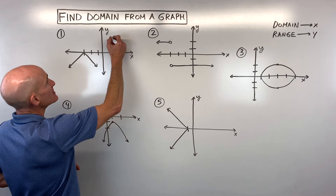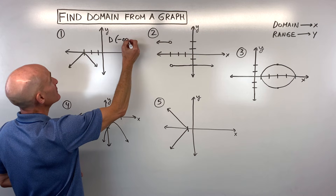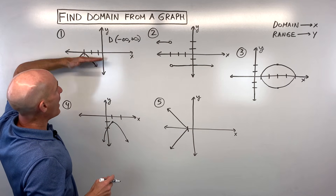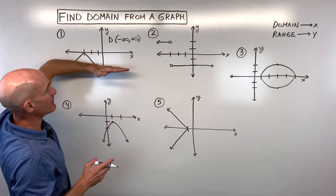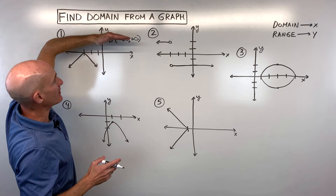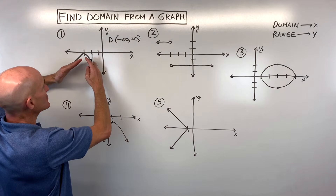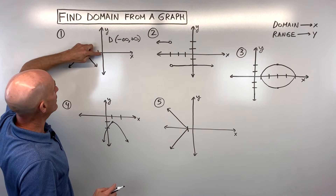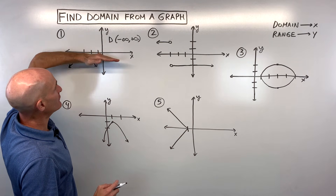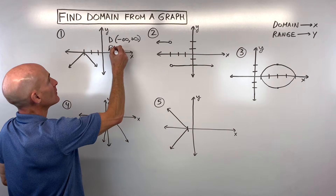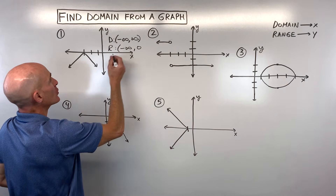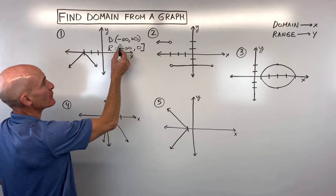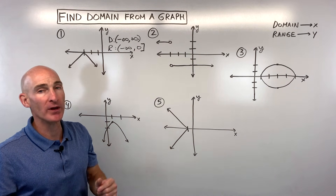So when we write that, we say the domain is from negative infinity to positive infinity. For the range, those are the y values. I take a horizontal line and scan from low to high. You can see this graph is going down forever, but the highest it goes is right here at a y value of zero. So the range is from negative infinity to zero, and it includes zero — we use a square bracket because it touches right here at the x-axis. Infinity is always open with parentheses since you can never reach infinity.